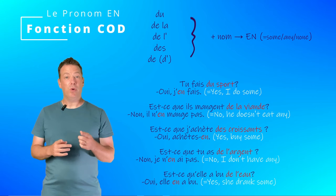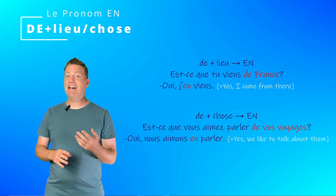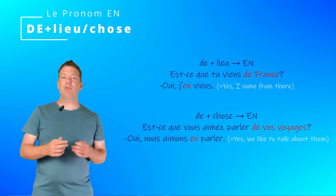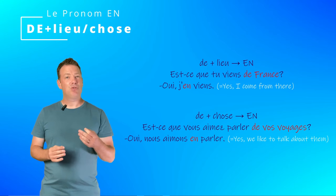The pronoun EN is also used to replace a place or a thing — not people — introduced by the preposition DE, translated as OF, FROM, or ABOUT in English. For example: Est-ce que tu viens de France? Oui, j'en viens. Here EN replaces DE FRANCE, the origin — a place introduced by the preposition DE.